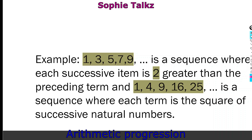And 1, 4, 9, 16, 25 is a sequence where each item is the square of successive natural numbers.